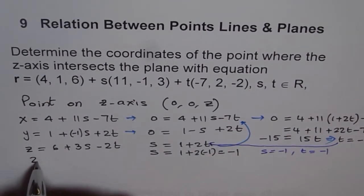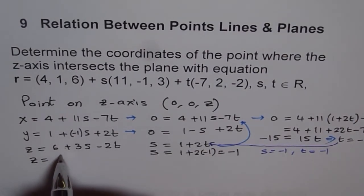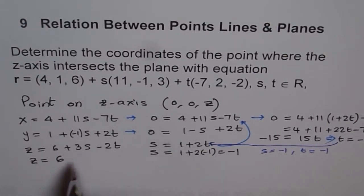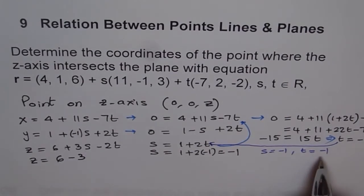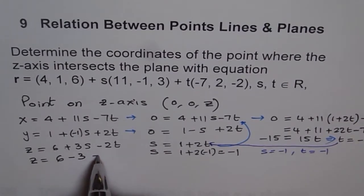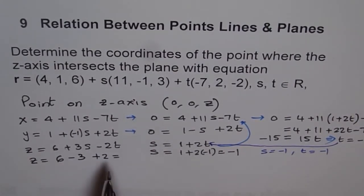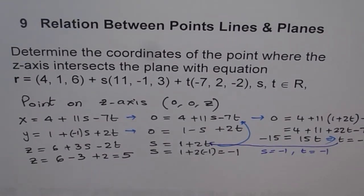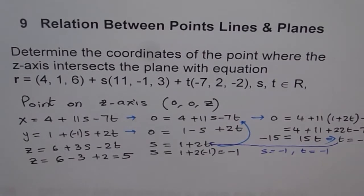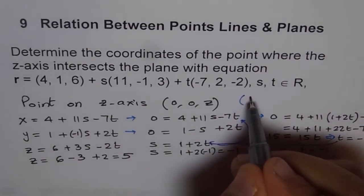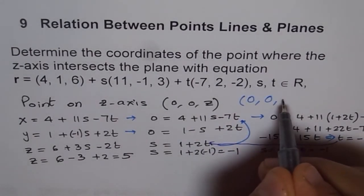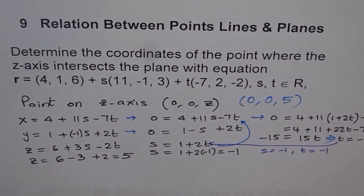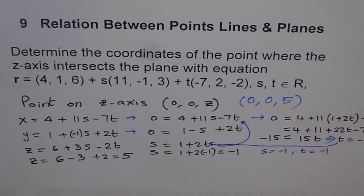And now we can get z is equal to, we'll sub in these values here, 6 minus 1 for s make it minus 3, and minus 1 for t make it plus 2, which will give us point 6 minus 3 is 3, 3 plus 2 is 5. Therefore the point of intersection for us is (0,0,5). So that is how we'll find point of intersection for an axis with the given plane. Thank you.